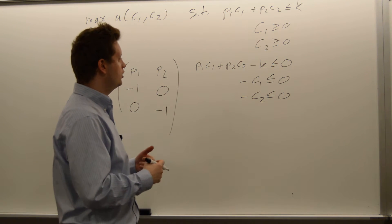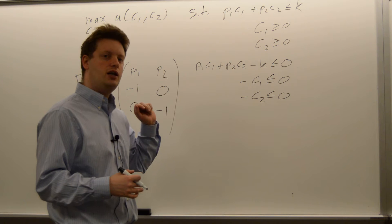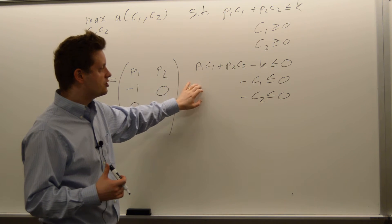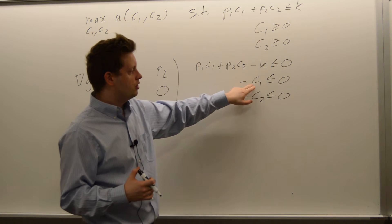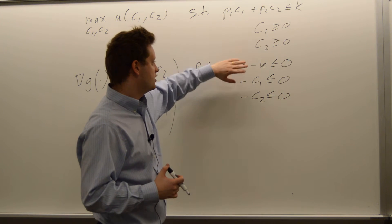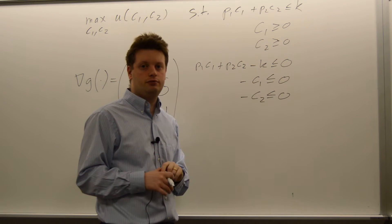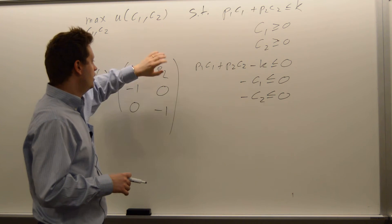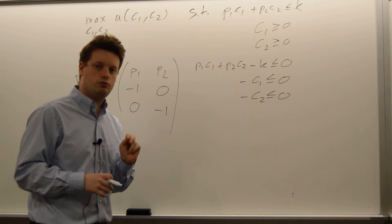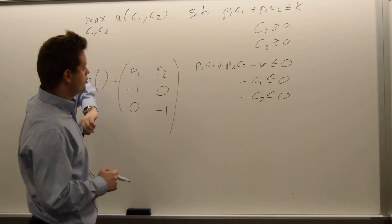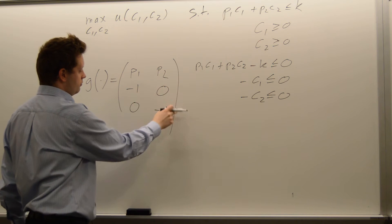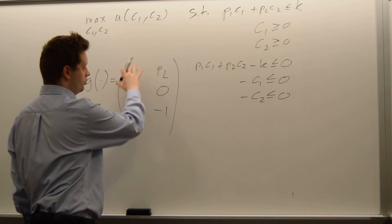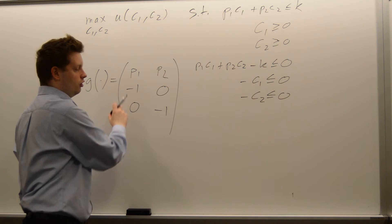We now have several cases: all three binding, two binding, or only one binding. If all three constraints are binding, that means c1 = 0, c2 = 0, and k = 0. With three binding constraints but two variables, the gradient needs rank 2. Looking at the gradient and ignoring the first row, the second and third rows each have rank 1 with no zeros, so together they always span R² and give full rank — this case is always satisfied.